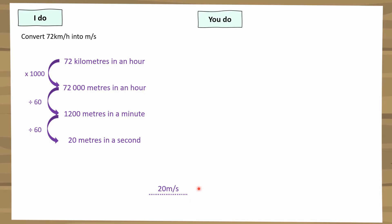Now you have a go at the question on the right — it's very similar, I've just changed the actual number. Follow these steps on the left and see if you can change 54 kilometres per hour into metres per second. Pause the video, then unpause when you're ready to see the answer.